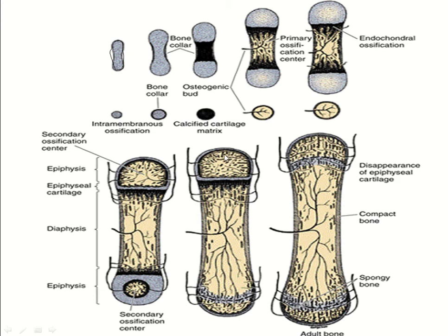So now this developing long bone has different parts. The bony part at each end is known as the epiphysis. This is the epiphysial cartilage. The central bony part is known as the diaphysis. The portion of the diaphysis near the epiphysial cartilage is known as the metaphysis. So the parts of the growing long bone are: epiphysis, epiphysial cartilage, metaphysis, diaphysis, metaphysis, epiphysial cartilage, and epiphysis.